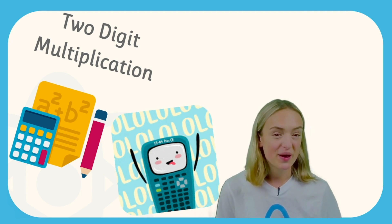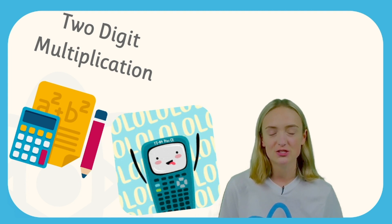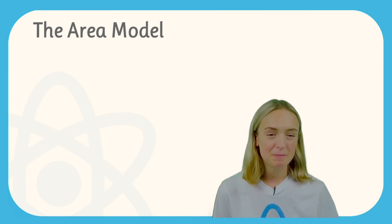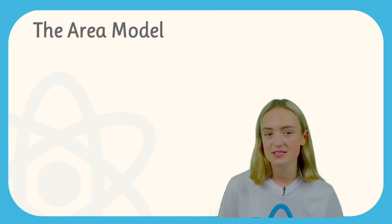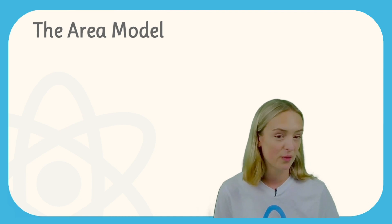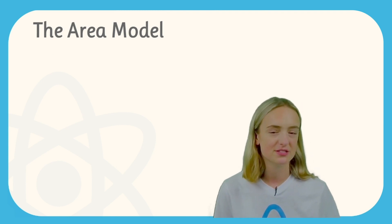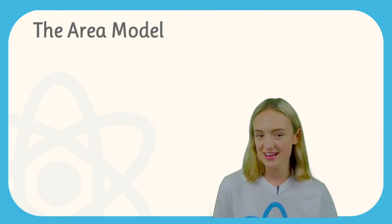So in this video we're going to look at how to multiply two-digit numbers using the area model. Now the area model is a written method that helps us to clearly see what we multiply and what we add when we're multiplying two-digit by two-digit numbers. So let's see this in an example.